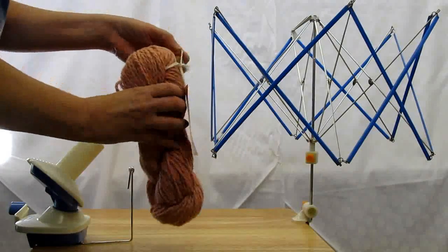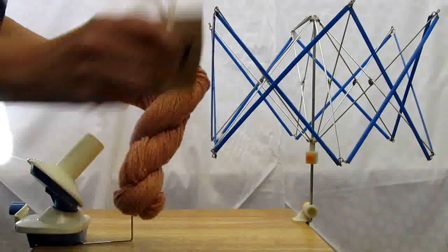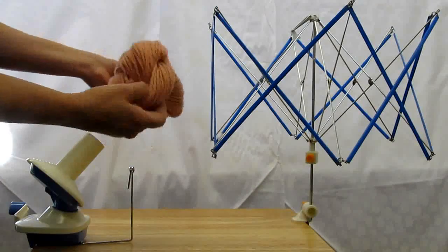Yarn that comes in a fancy skein like this needs to be wound. The first thing you do is take the tag off, and then you unwrap the yarn.